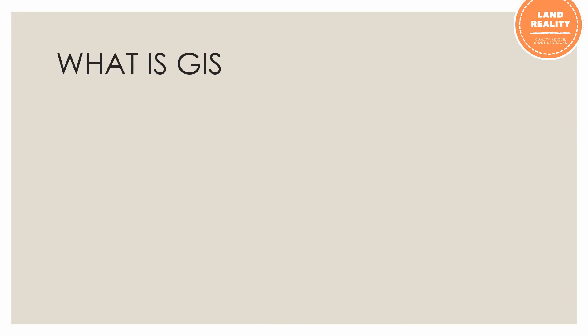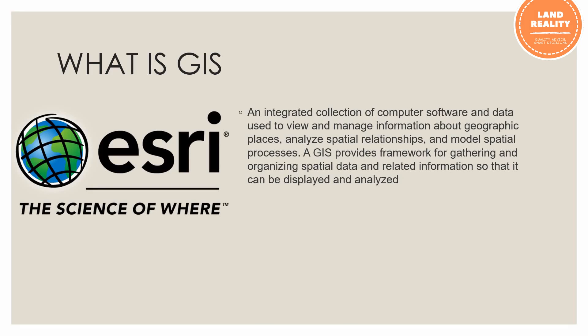What is GIS? According to the ESRI website, GIS is an integrated collection of computer software, data, and user views to manage information about geographic places, analyze spatial relationships, and model spatial processes. A GIS provides a framework for gathering and organizing spatial data and related information so that it can be displayed and analyzed.